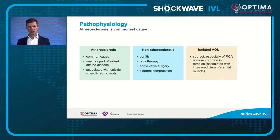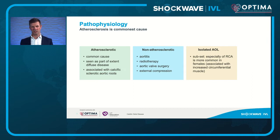Most commonly the disease process is atherosclerotic, seen as part of extensive diffuse disease, but occasionally it can also be part of aortic calcification. We see it in non-atherosclerotic disease where there's aortitis, radiotherapy, or previous valve surgery. There's also a slightly unusual isolated subset predominantly in right coronary arteries and predominantly in women, which we think is driven by a muscular circumferential mass driving these isolated lesions.